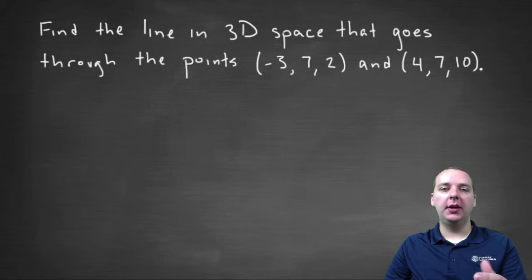In this exercise we're being asked to find a line in space that goes through these two points that are provided: negative three, seven, two, and four, seven, ten.